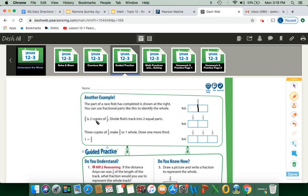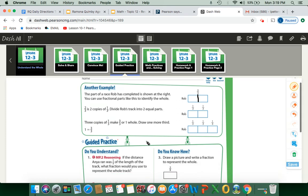Two-thirds is two copies of one-third. Divide Rob's track into two equal parts. They did that for us. Awesome. Just like we did up here. And three copies of one-third make three-thirds, or one whole. Draw one more third. One equals three-thirds. One whole equals three-thirds. Whenever we're representing one whole, the numerator and the denominator is the same, and we'll see that here shortly in another example.